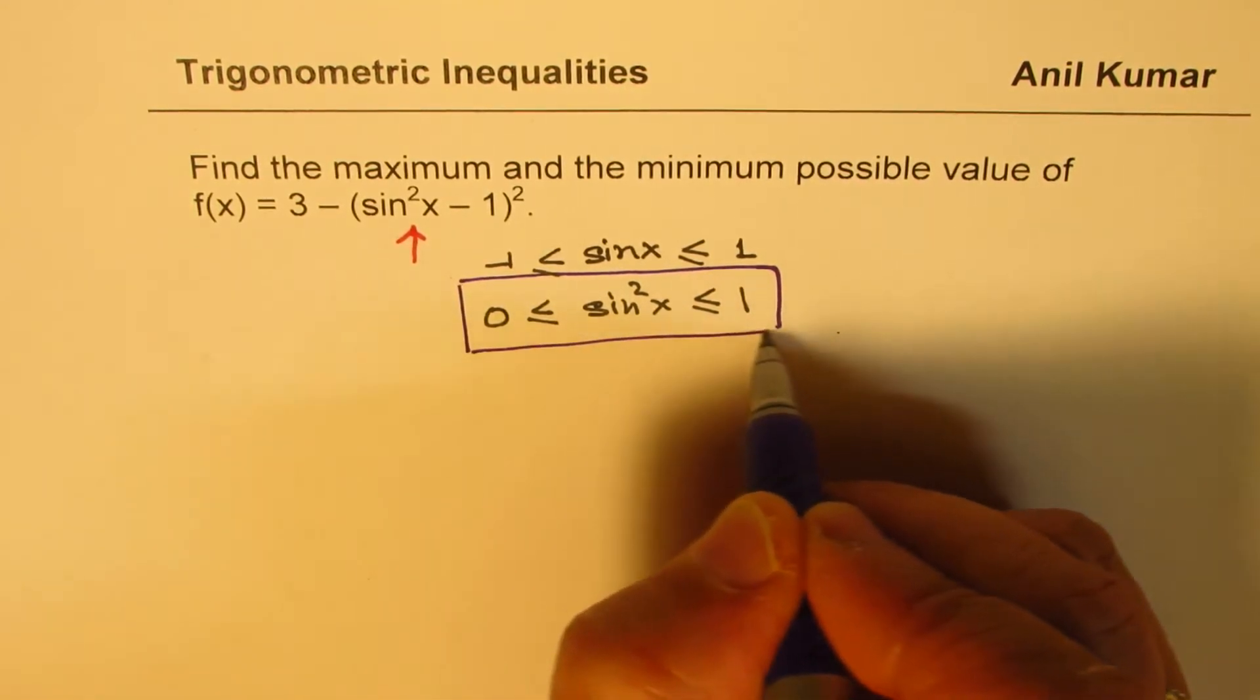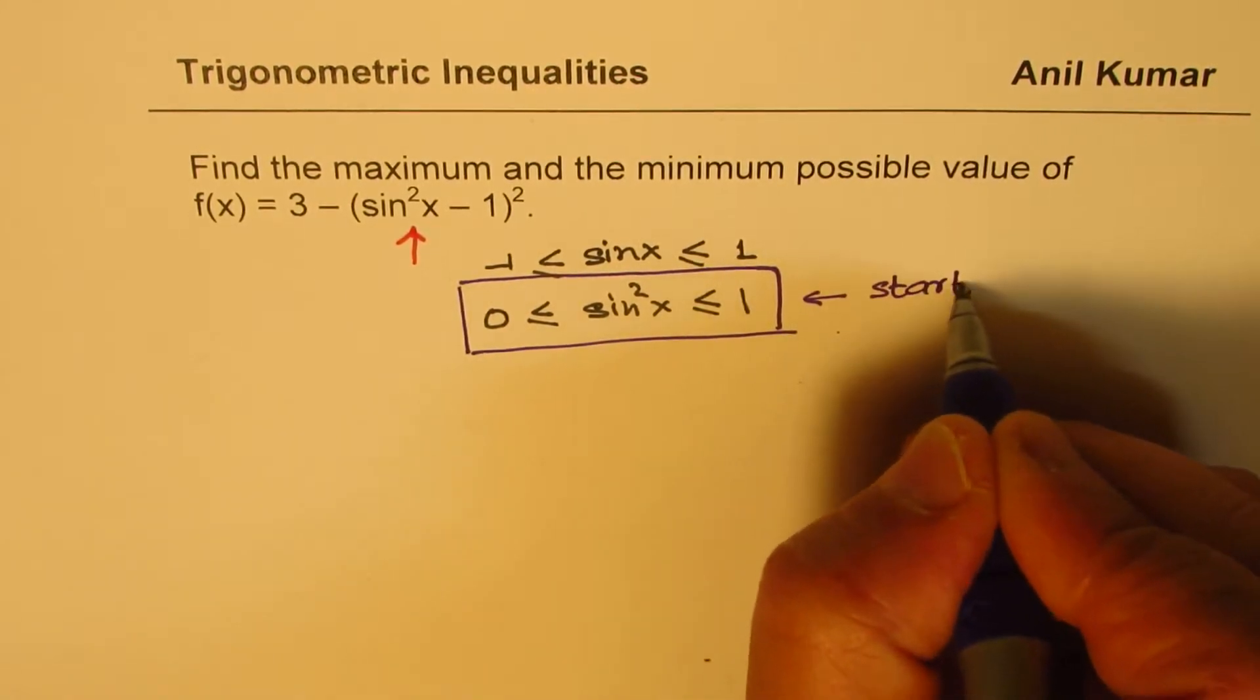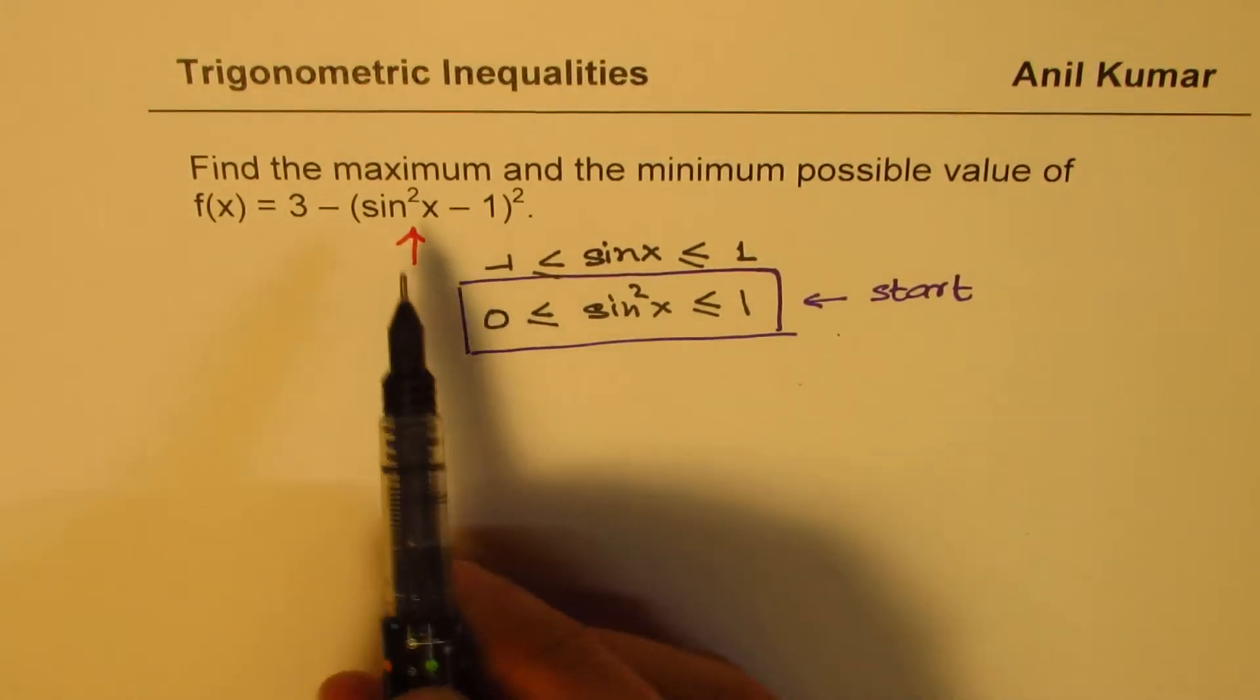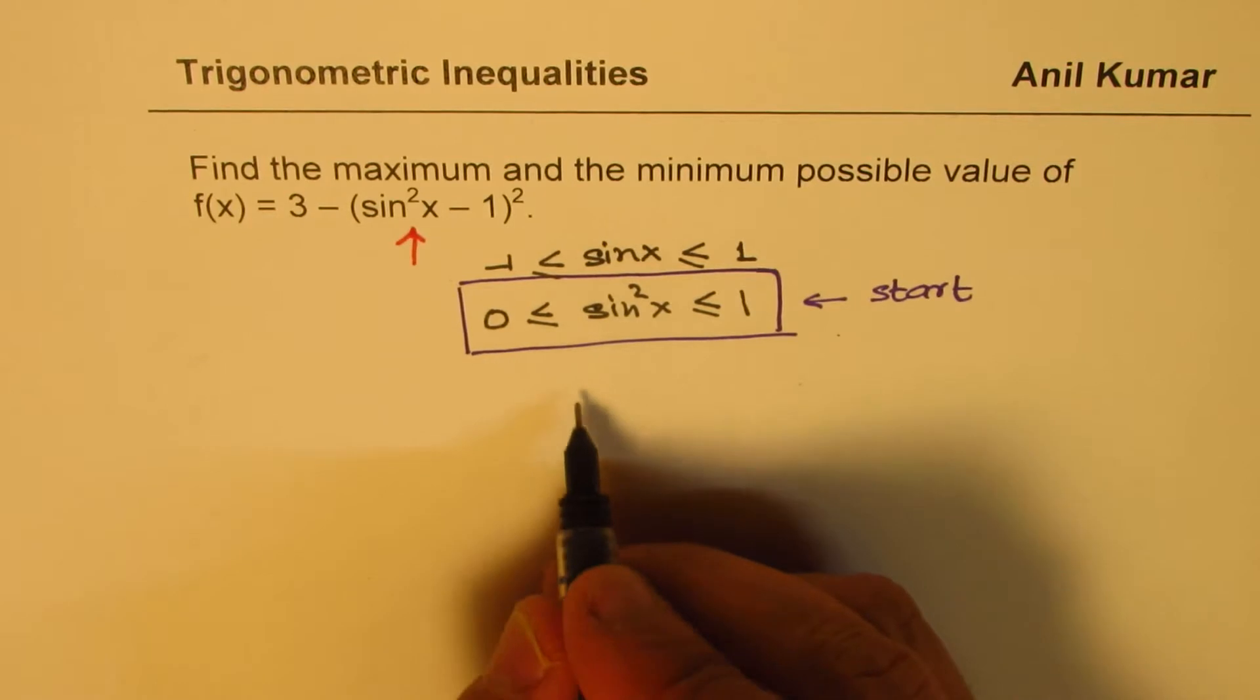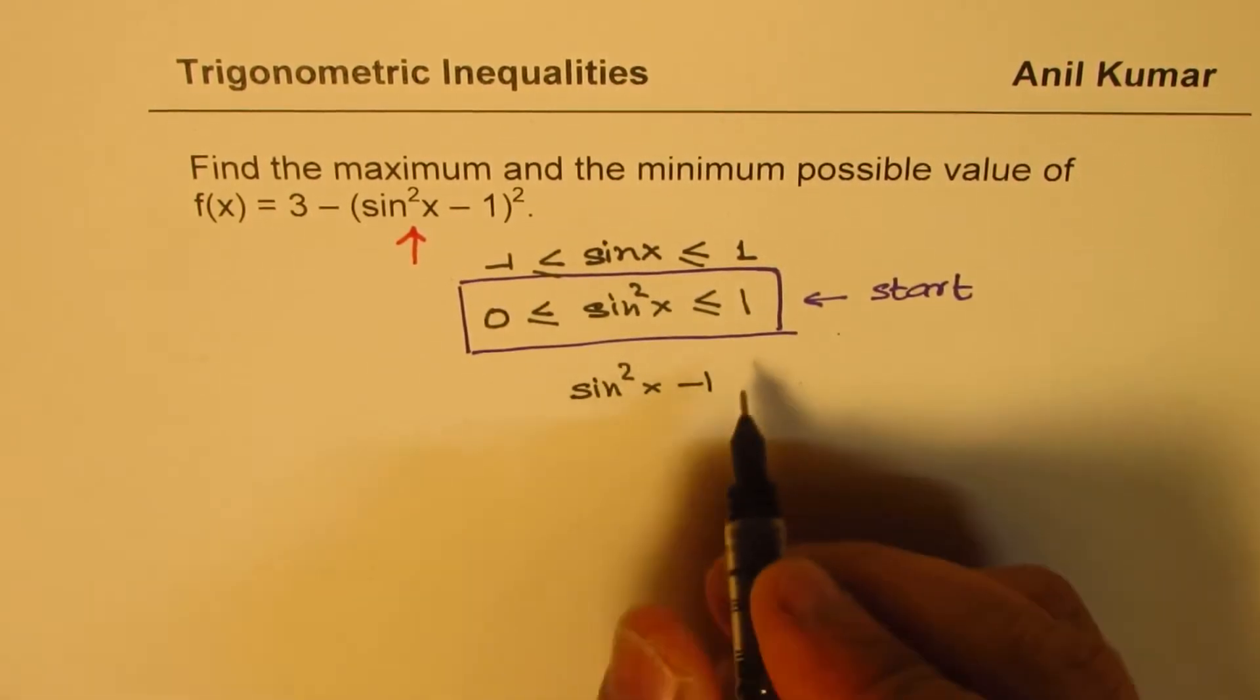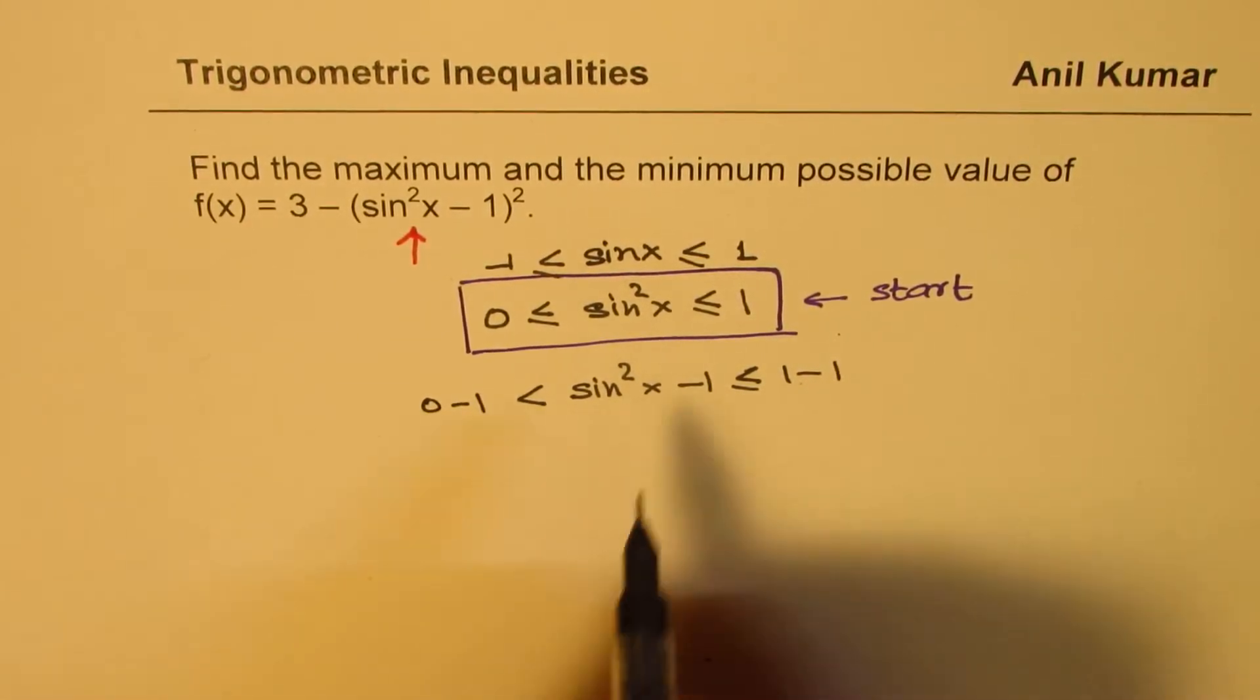So if you have sin²x in your function, that is where you should start and then continue. That is the key which I want to bring to your notice. Now let's see sin²x minus 1. So we'll build the function itself. So we'll do minus 1 everywhere, so we get sin²x minus 1 is less than equal to 1 minus 1 and 0 minus 1.